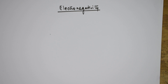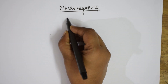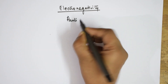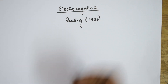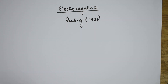Whenever you are learning a concept, try to learn it completely. Electronegativity — this concept was brought into effect by Pauling in 1931. He defined electronegativity as: it is a power or the tendency of an atom in a molecule to attract the shared pair of electrons towards itself.